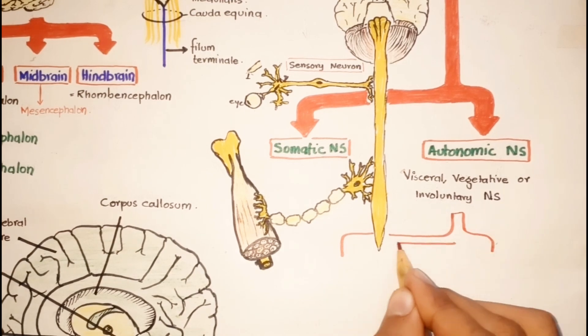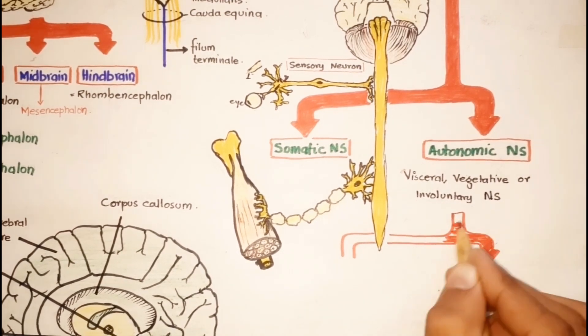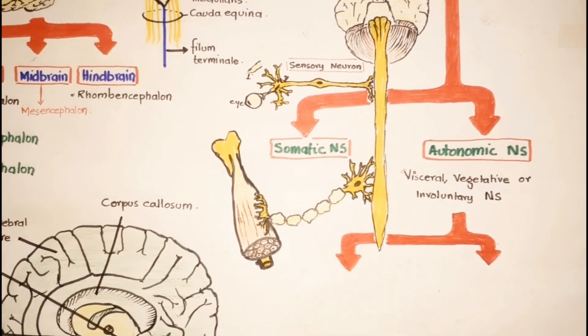The autonomic nervous system is further subdivided into the sympathetic nervous system and the parasympathetic nervous system.